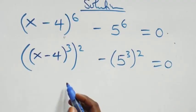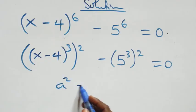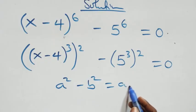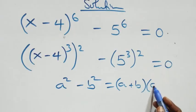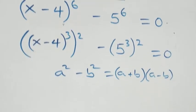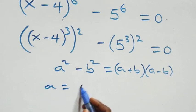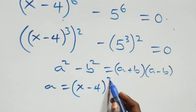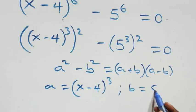Then this follows from the difference of two squares: a squared minus b squared is the same thing as (a plus b) into brackets, times (a minus b). Here, a stands as (x minus 4) raised to the power 3, and b stands as 5 raised to the power 3.